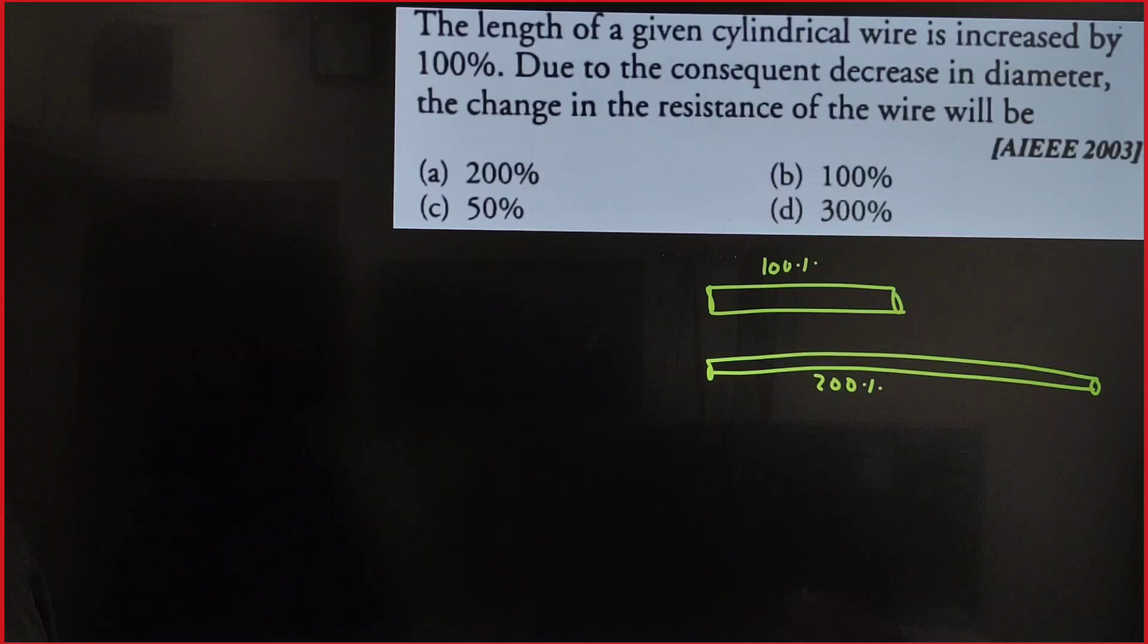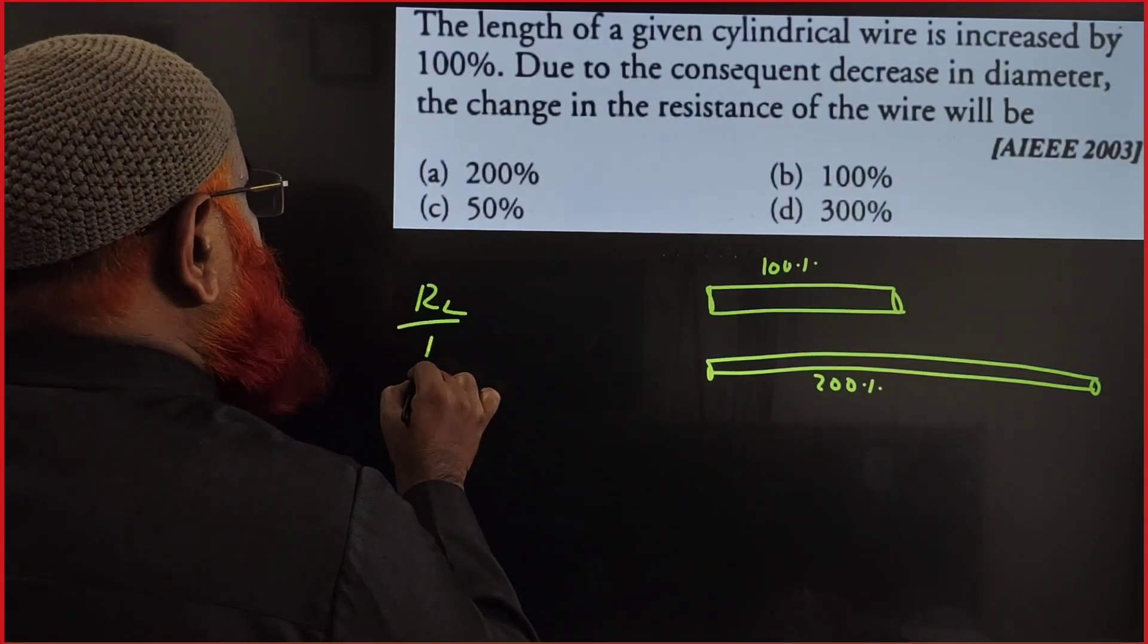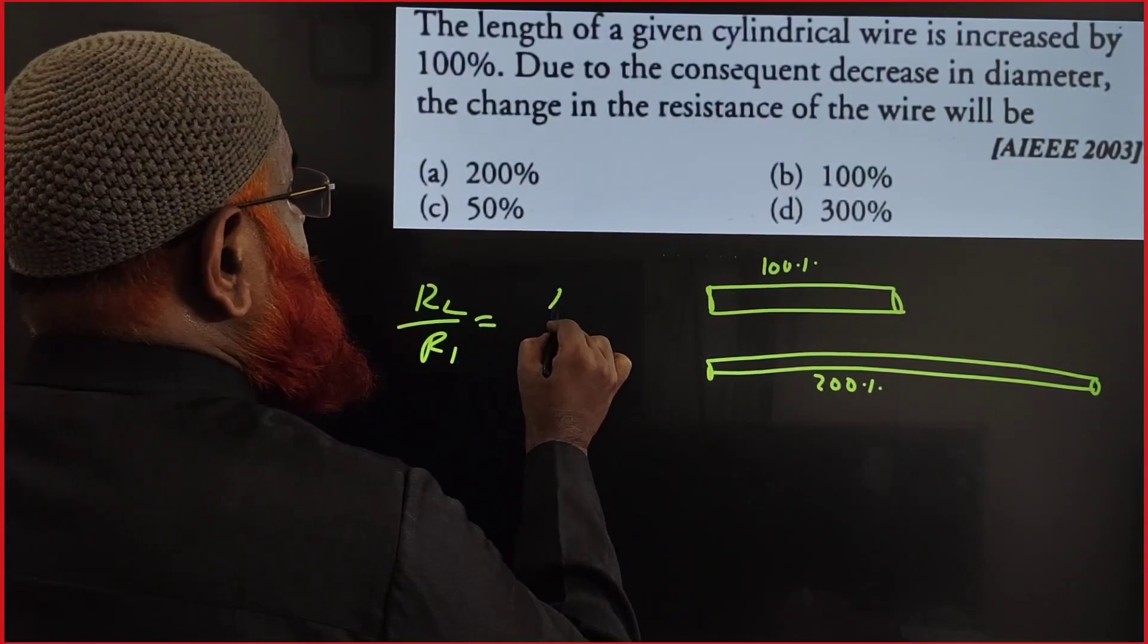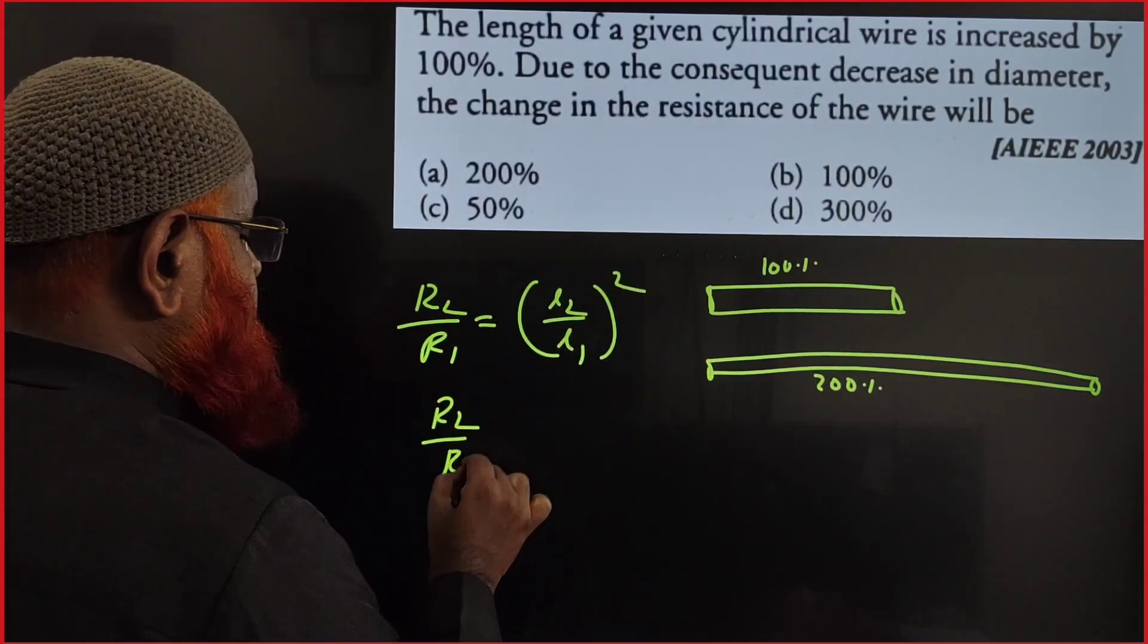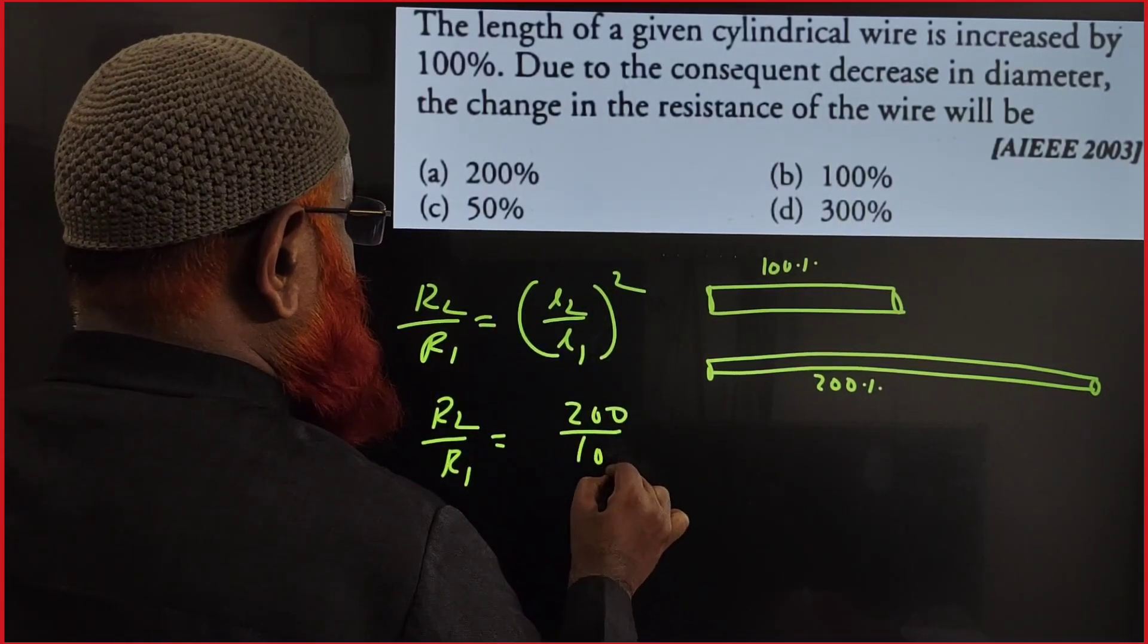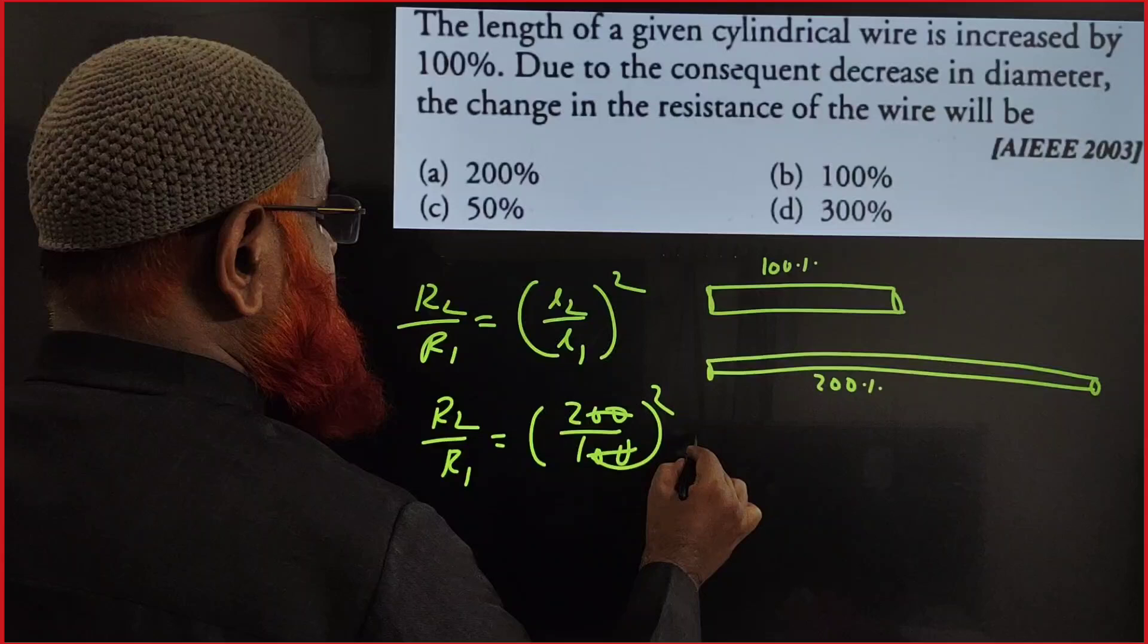It is going to be 200%. 200%, so length has become doubled, 200% here. So what is going to happen if it becomes 200% here? R₂ by R₁ is equal to L₂ by L₁ whole square. So R₂ by R₁, L₂ is how much? 200 divided by 100, whole square means it cancels, becomes 4.